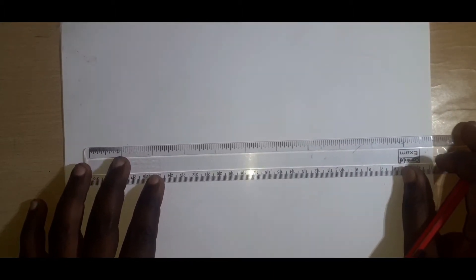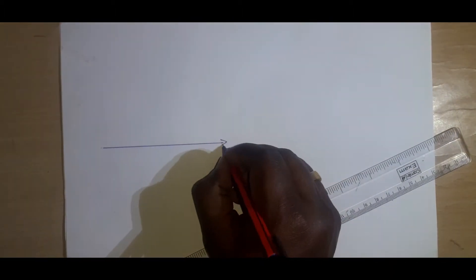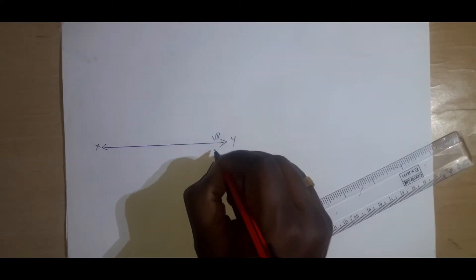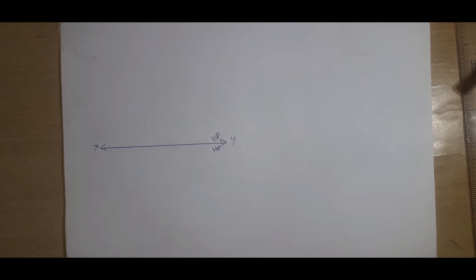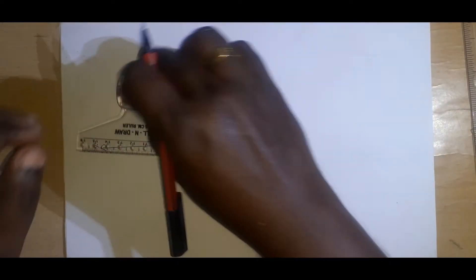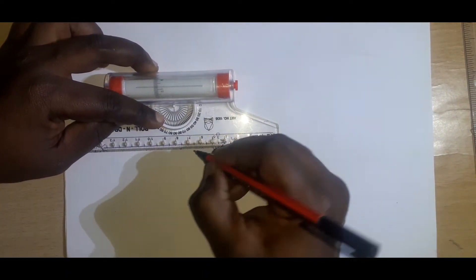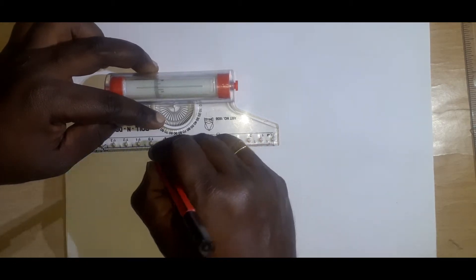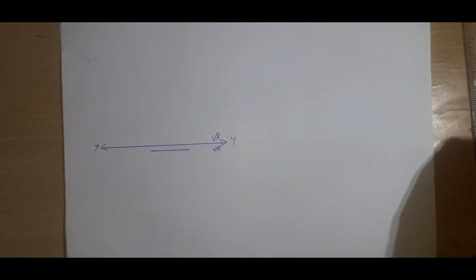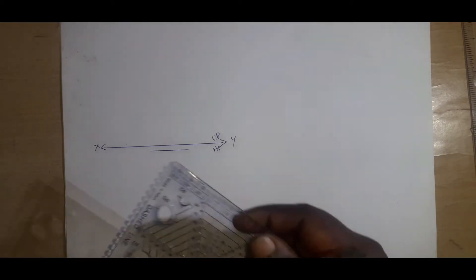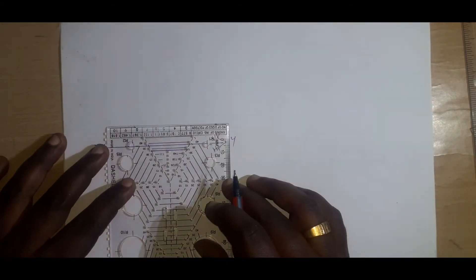Now we draw the XY line — a shorter one, because for a pyramid we do not need the lengthy one like for a cylinder or prism. This is VP and this is HP. We identify the parallel line since it is given as parallel, and draw it with a dimension of 30mm. Now we take the engineering template to identify the hexagon. This is given as 30mm, so we take 30mm.